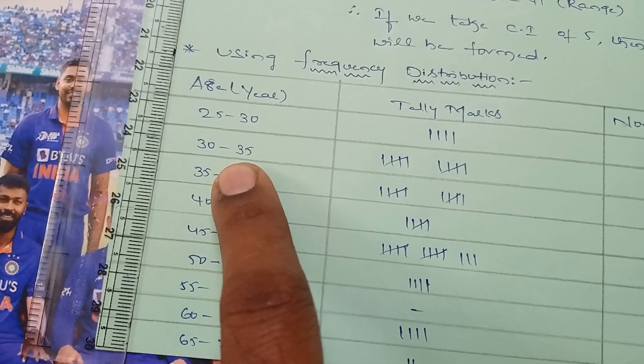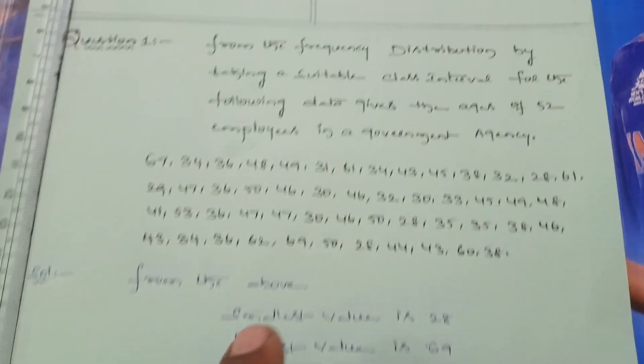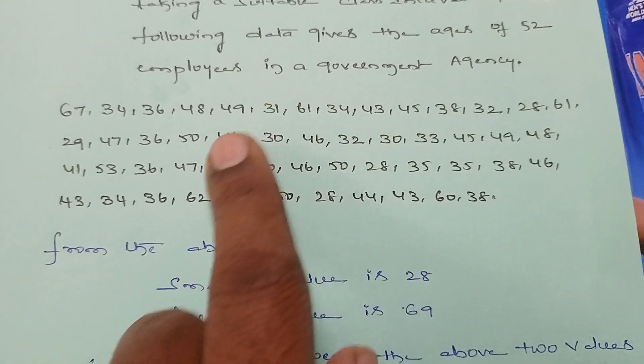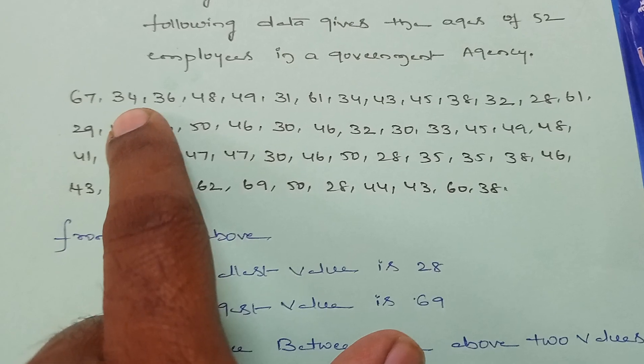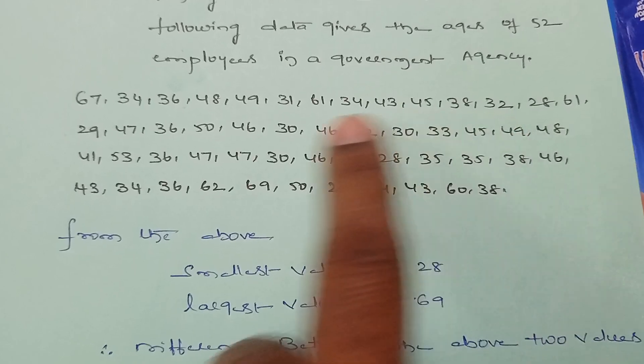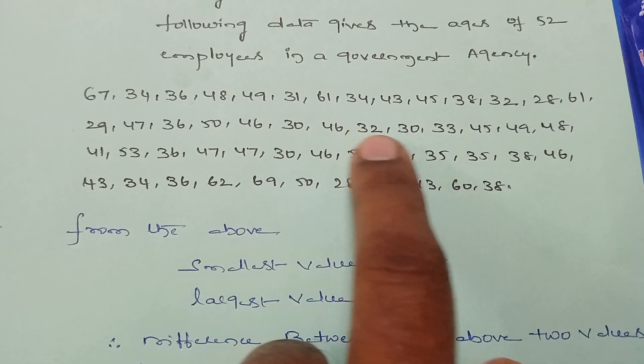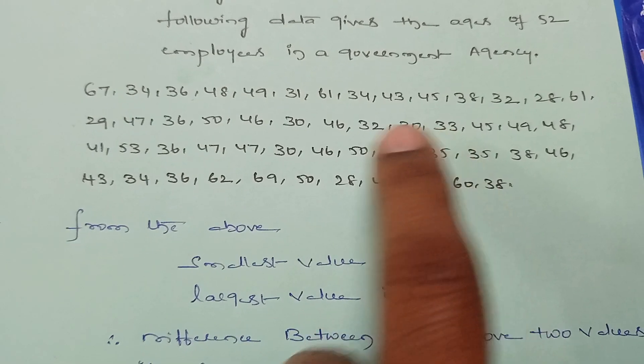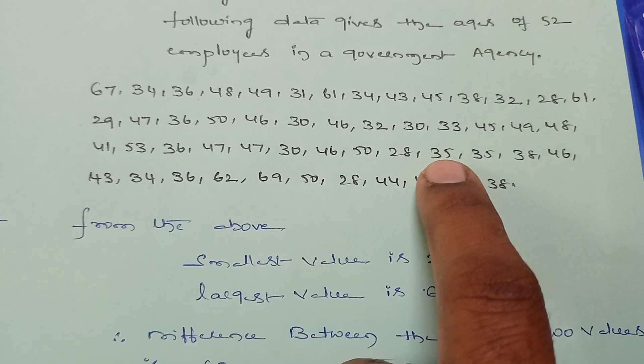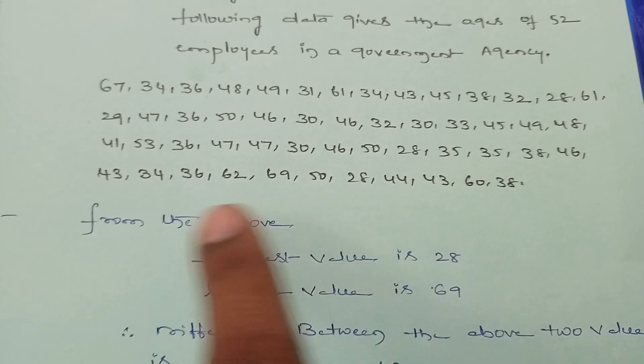Similarly, 30 to 35 means 30 to 34, don't include the upper boundary. We have 1, 2, 3, 4, 5, 6, 7, 8, 9, 10 observations in this interval.